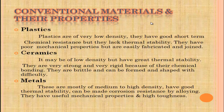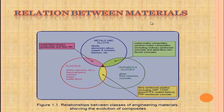Conventional materials and their properties: Plastics have very low density and good short-term chemical resistance, but lack thermal stability and have poor mechanical properties, though they are easily fabricated and joined. Ceramics may be of low density but have great thermal stability; they are very strong and rigid due to chemical bonding, but are brittle and can be formed with difficulty. Metals are mostly medium to high density, have good thermal stability, can be made corrosion resistant by alloying, and have useful mechanical properties and high toughness.